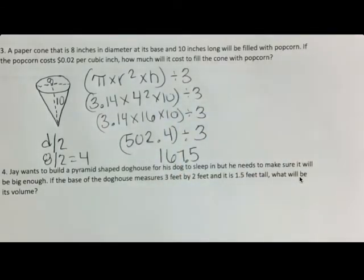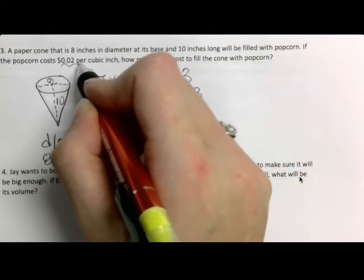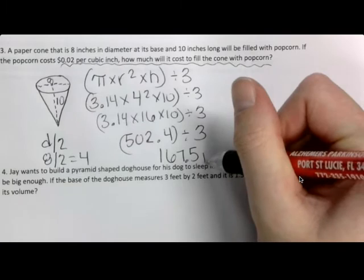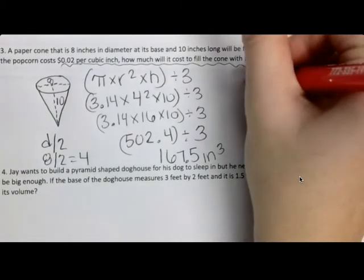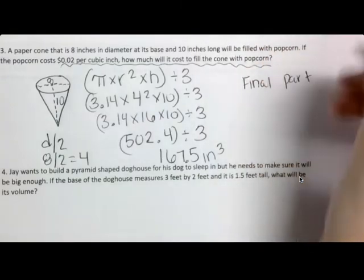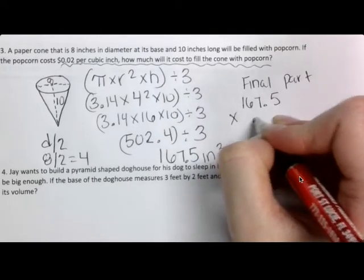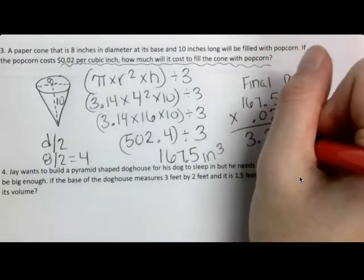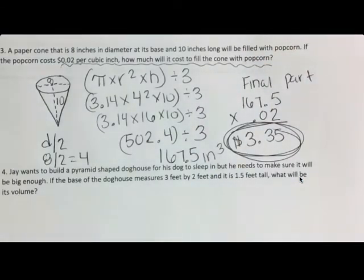167 and 5 tenths. Now, the question says, if it costs 2 cents per cubic inch, how much will it cost to fill the popcorn? So, this is inches cubed. That's if it costs 1 cent for each one. However, it costs 3 cents. So, the final part is going to be 167 and 5 tenths times 2 cents. And when you do that multiplication, you get $3.35. And that is the final answer for the problem.